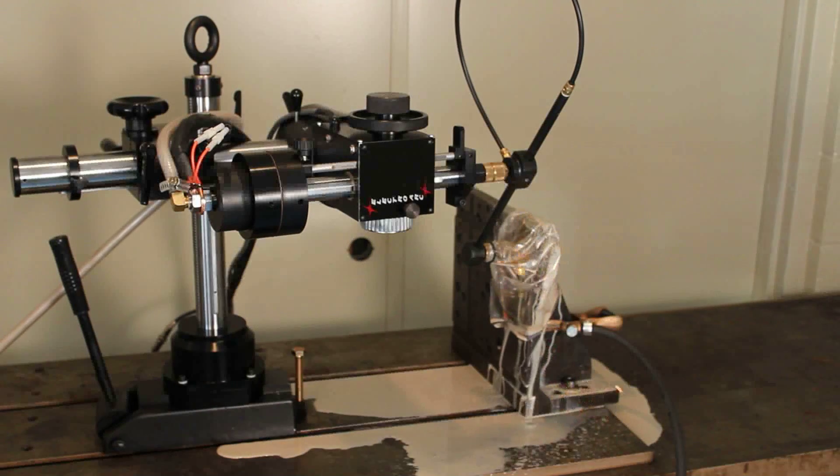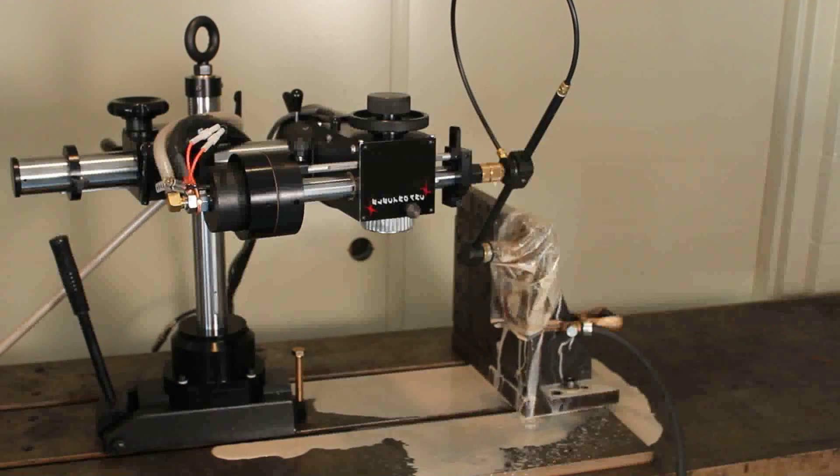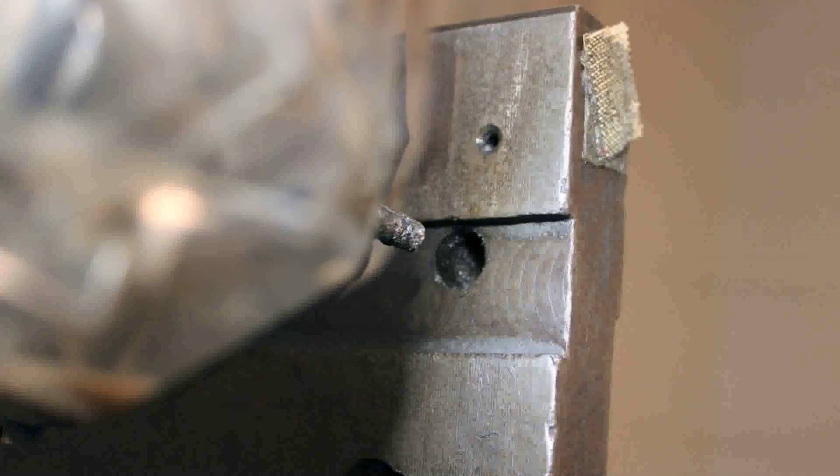In this case, we have simply pressed the stop button and used the servo head to retract the electrode out of the tap.